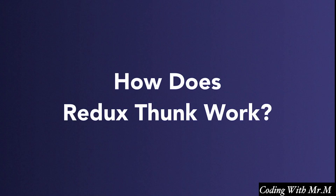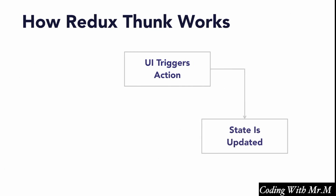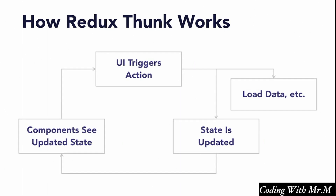Now that we know the basic goal of Redux Thunk, how does it work exactly? Redux Thunk works by tapping into the normal Redux data flow. If we have our normal unidirectional data flow where our components trigger actions, those actions cause predictable changes to the data in our Redux store, and these data changes are then reflected in our components, Redux Thunk allows us to add a sort of fork into this loop where we can put the logic for our side effects, whether that's loading data or performing some other asynchronous operation.